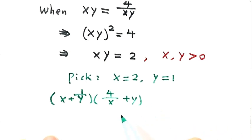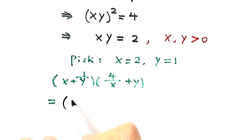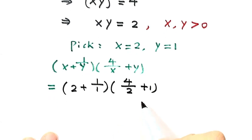Then plug in. Then just equals x equals, so then the first part is 2 plus 1 over 1. Then the second part is 4 over 2 plus 1. Then simplify it.